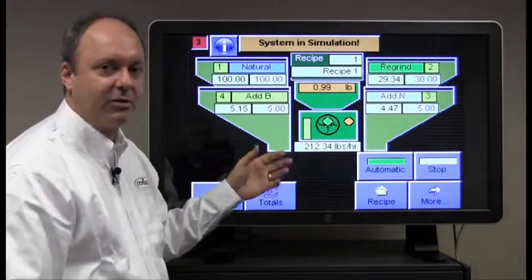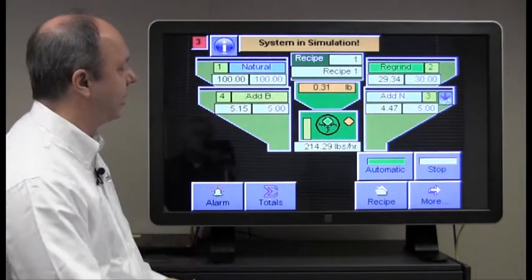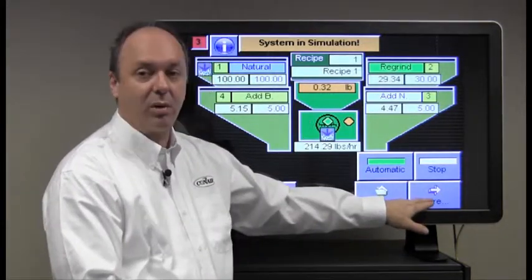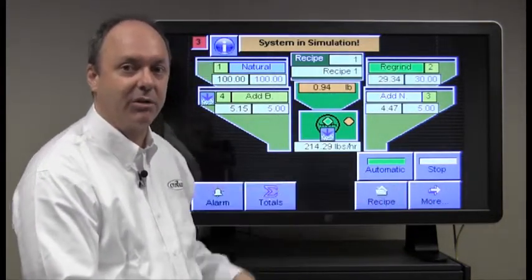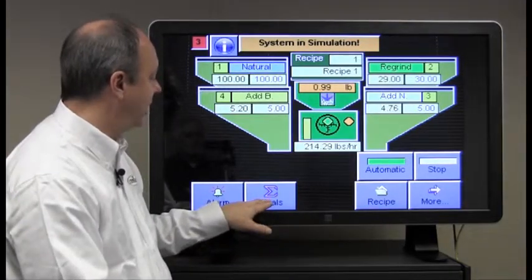This is the home screen for the SB2 Blender. To get to the totals reporting feature, you can press the totals button, or you can press the more button and move from the home screen and select reports. Since we're talking about the totals, we'll press it here.